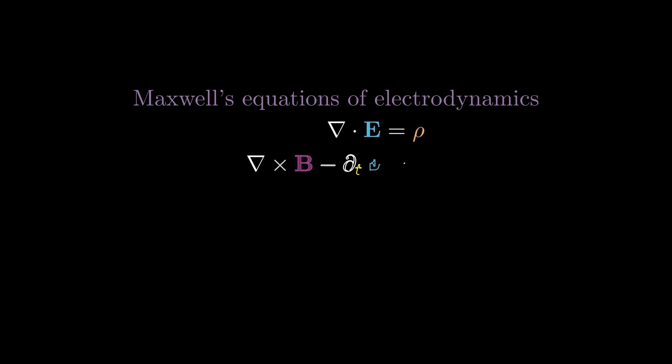With that out of the way, let's get started with the physics. To recap, these are Maxwell's equations of electrodynamics. For convenience, I have dropped the constants. We have rho as the electric charge density and j as the vector electric current density.